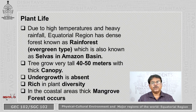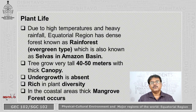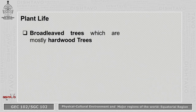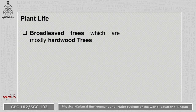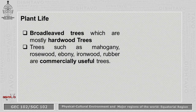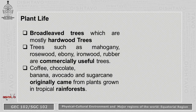If a country is located in a coastal area, you will find thick mangrove forest cover. The trees found in the tropical rainforest are broad-leaved and mostly hardwood — because of the high temperatures, trees are hardwood, whereas in cold areas trees are normally softwood. Trees such as mahogany, rosewood, ebony, ironwood, and rubber are commercially useful in trade and commerce.